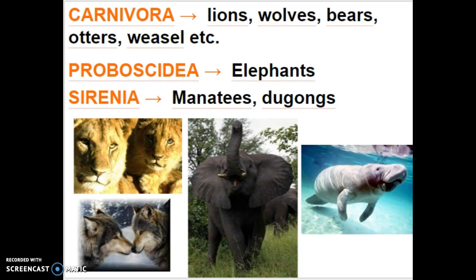Class Cyrenia includes the manatees and the dugongs. They were named because of the old Greek mythology story of the sirens that would sing along the shores and distract ships, making them crash. Ancient sailors also mistook manatees for mermaids, so they were seen as beautiful beings of the sea. Sometimes they're called sea cows because they're herbivores, and their closest ancestral relative is the elephant.